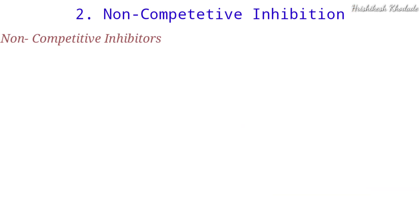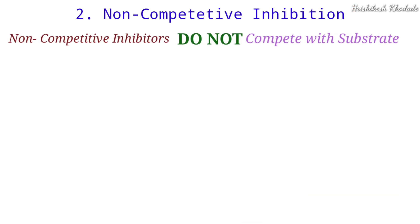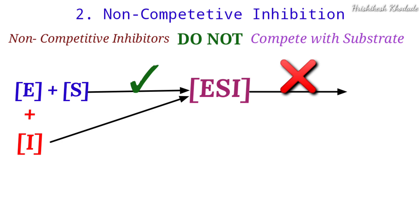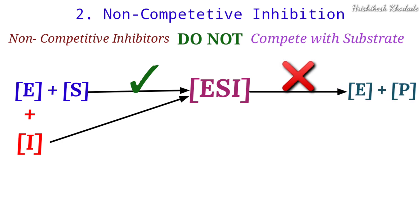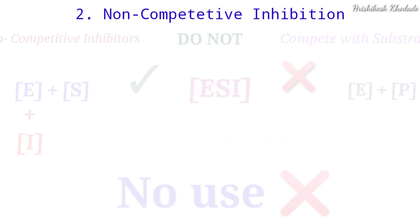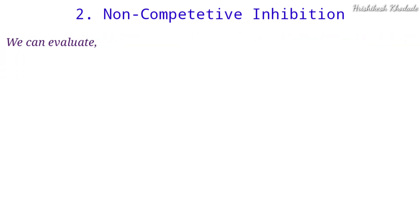This type of inhibitor does not create competition with the substrate. It allows the enzyme-substrate complex to form, but interferes with its dissociation into product. The enzyme-substrate complex gets trapped inside the enzyme-substrate-inhibitor complex, making it effectively non-productive.